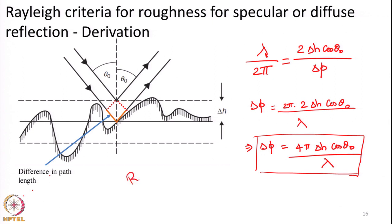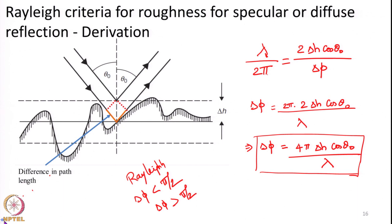Rayleigh criteria states: if delta phi is less than pi by 2, that surface is smooth; if delta phi is more than pi by 2, that surface is rough. Applying that condition to the equation, if delta h is less than lambda / (8 * cos(theta_0)), that surface is smooth. If delta h is more than lambda / (8 * cos(theta_0)), that surface is rough. This is the original Rayleigh criterion developed by Lord Rayleigh.